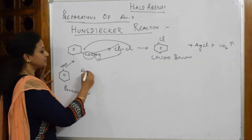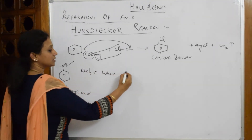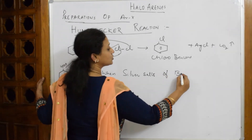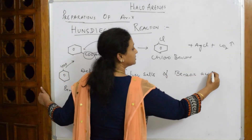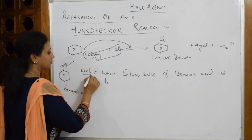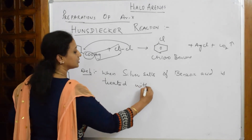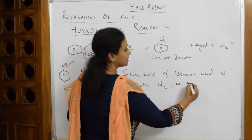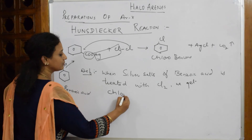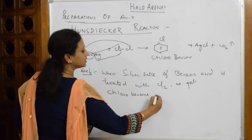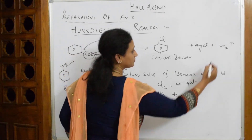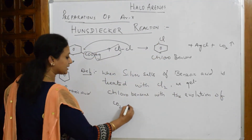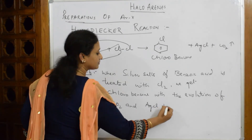Hunsdiecker reaction definition: when the silver salt of benzoic acid is treated with chlorine, we get chlorobenzene along with the evolution of carbon dioxide gas and AgCl precipitate.